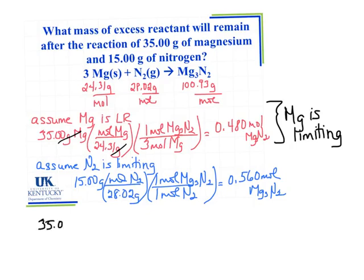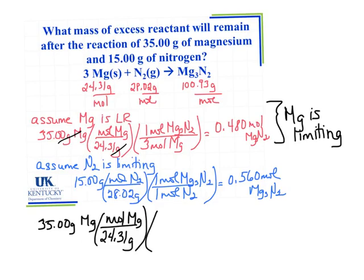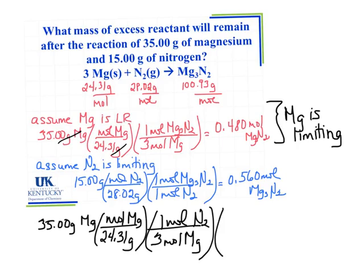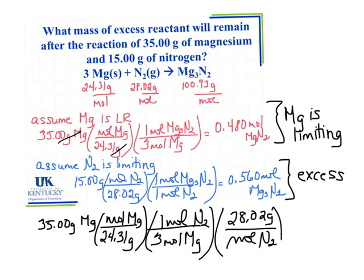Starting again with 35 grams of magnesium, I use the molar mass of 24.31 grams per mole of magnesium. Now instead of looking at the relationship between magnesium and magnesium nitride, I look at the relationship between magnesium and nitrogen, which is 3 moles of magnesium for 1 mole of nitrogen. I do need to convert to grams on this one because I'm finding the mass of the excess reactant. I've already identified nitrogen as my excess reactant, so I need to figure out how much nitrogen is needed to completely consume all of the magnesium.